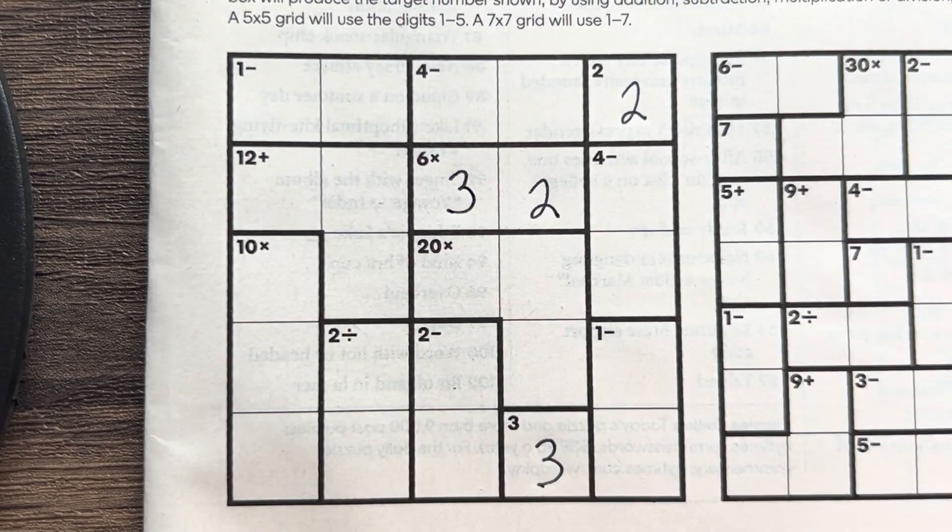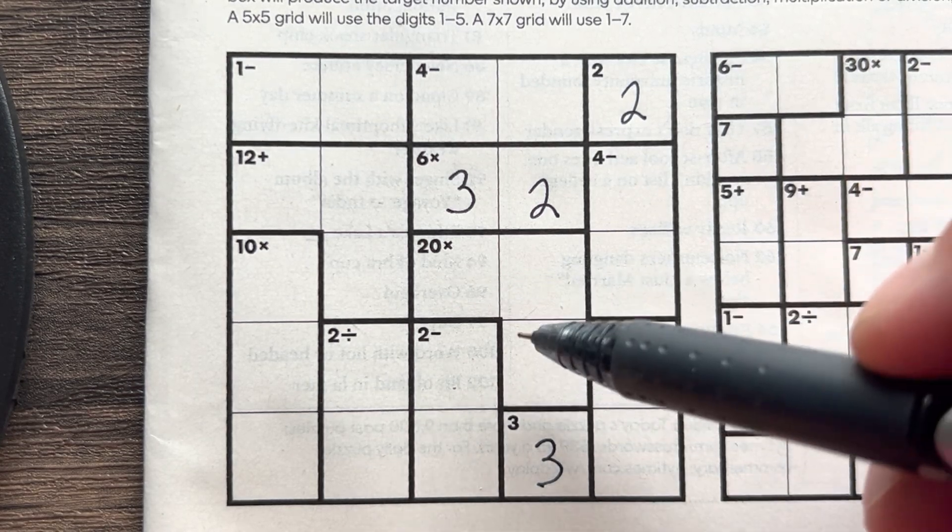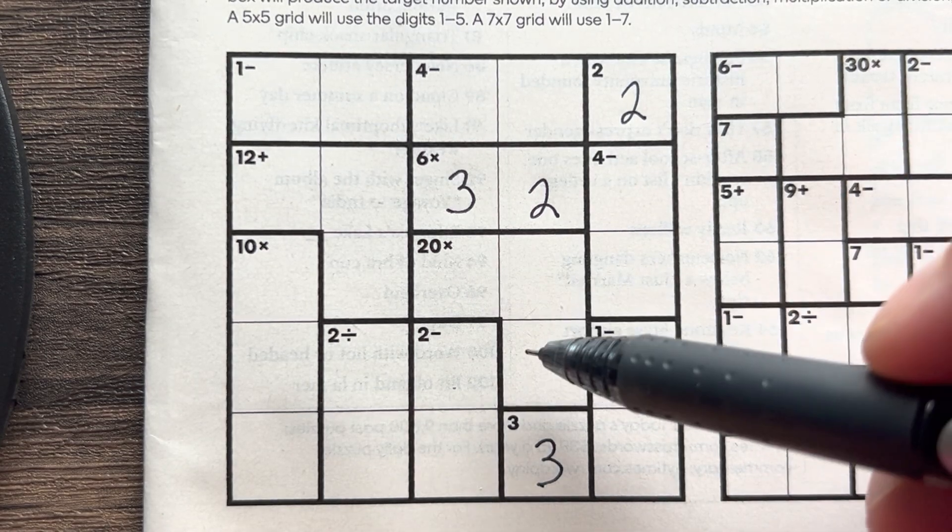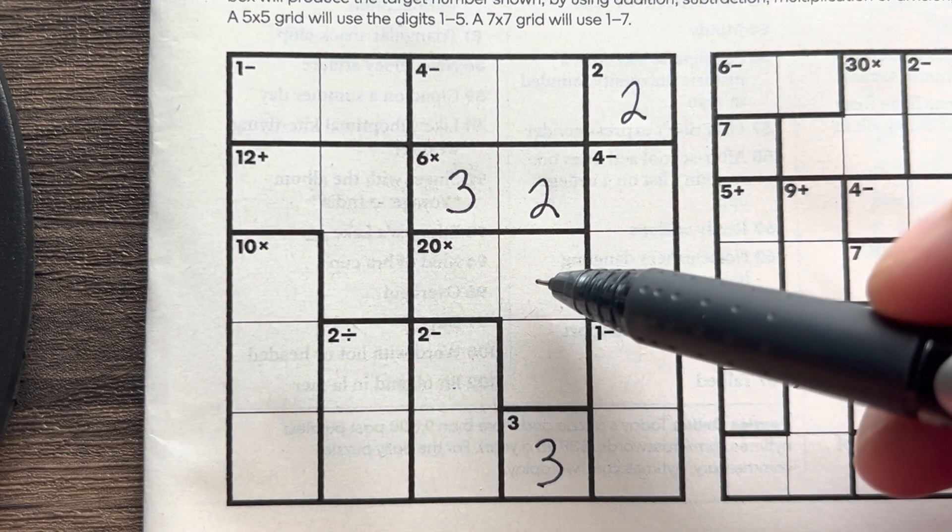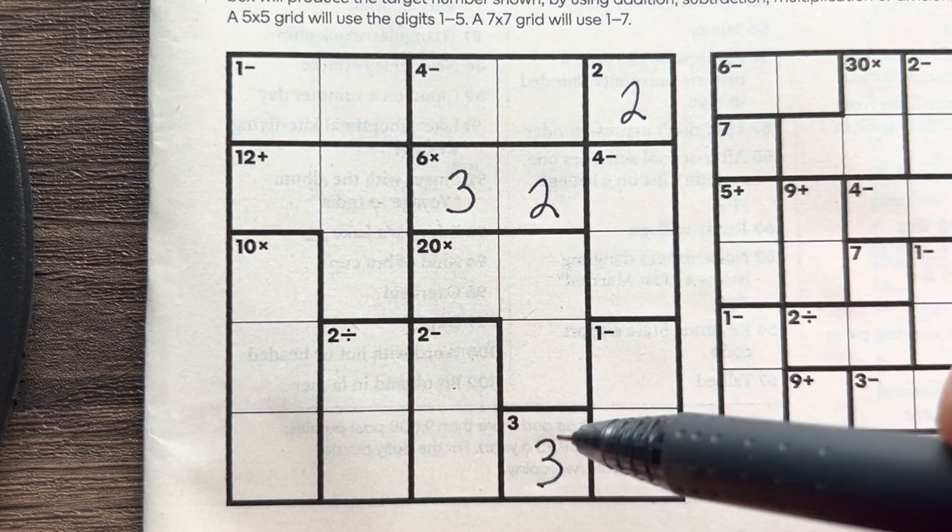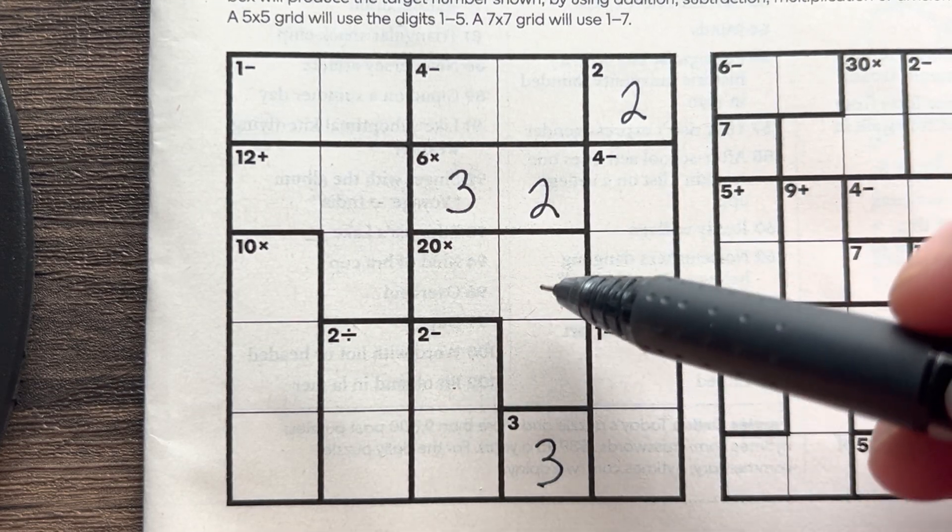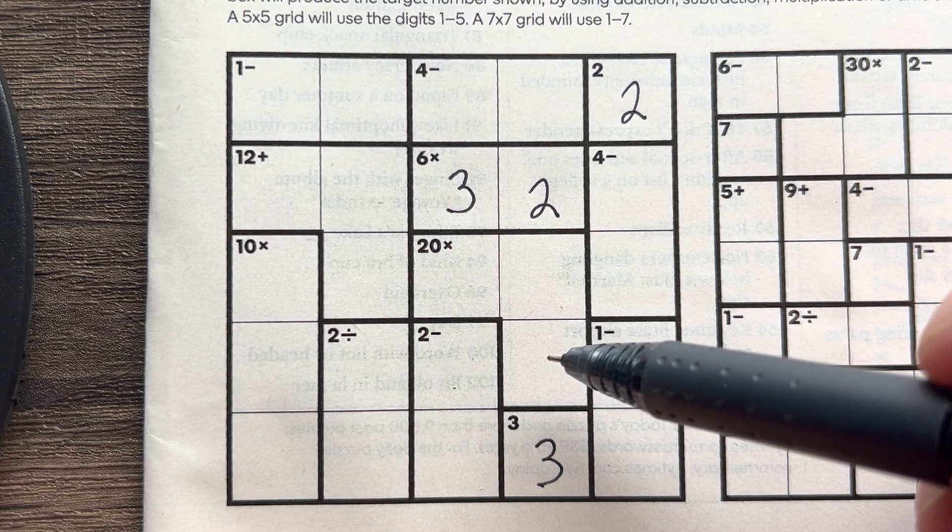We've got a three so we can put that in. This could have been two two five, but the two blocks it here so that actually helped us out a lot. So we know this is one four five in some way, but I don't think we can place it quite yet.